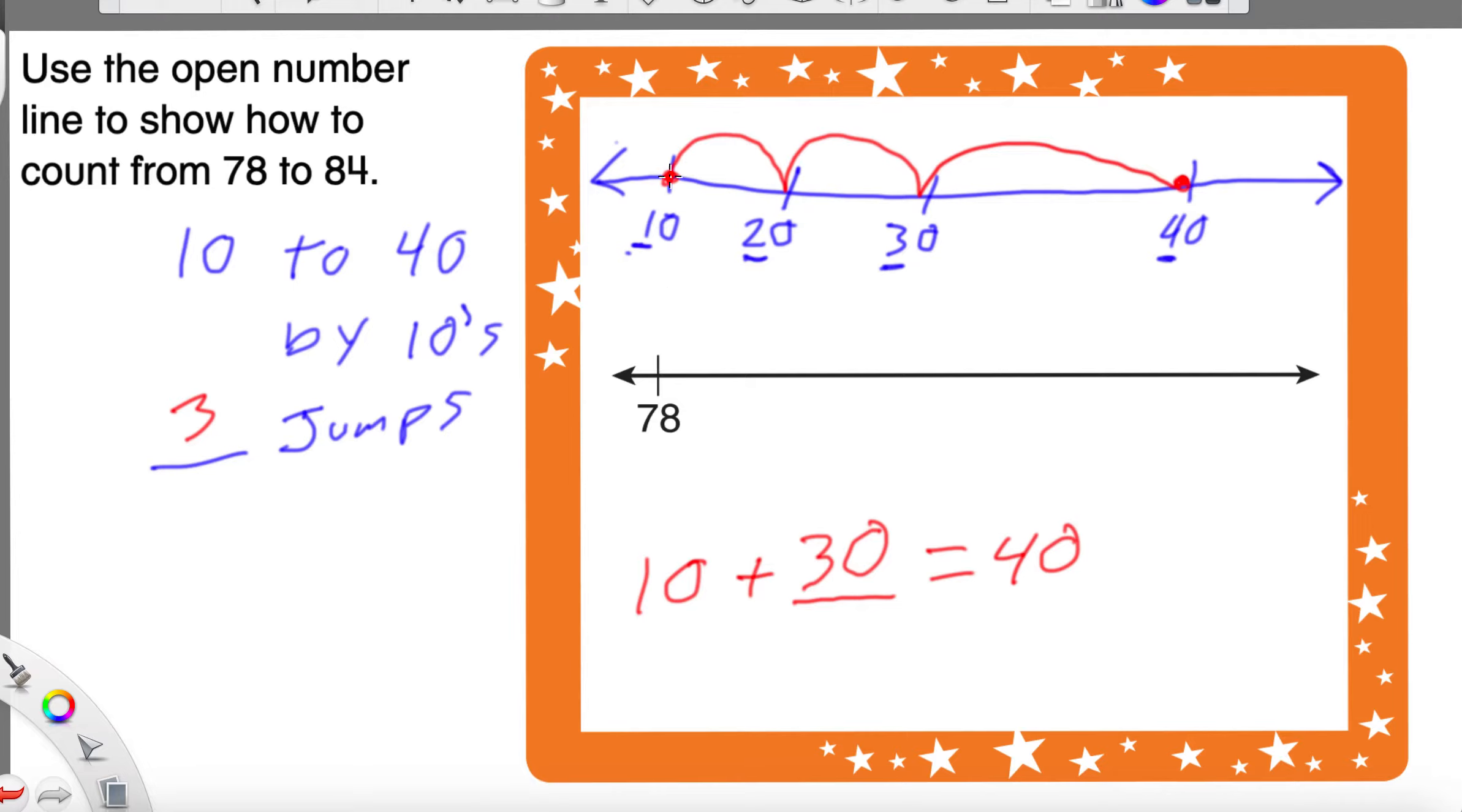So, we can count by 10s as we jump. Ready? 10. 20. 30. See? I got the same number. So, you can even put, right above the jumps, you can put plus 10. Plus 10. And, plus 10.